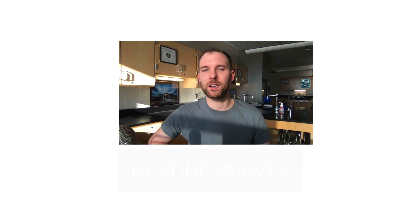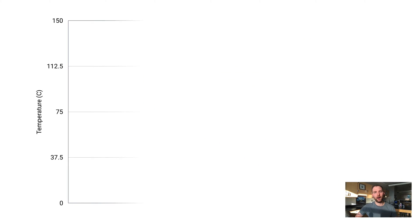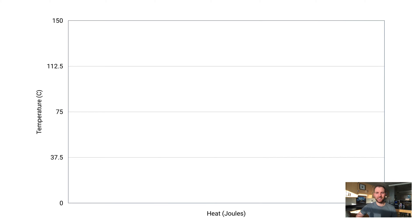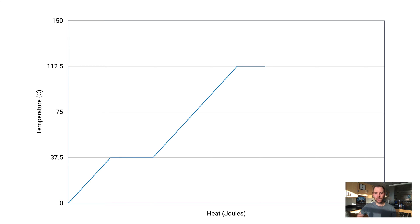The heating curve is what you would plot if you were to plot that temperature as heat is added at a constant rate. Here's an example heating curve: the y-axis is temperature, the x-axis is heat or sometimes time. This is a somewhat oversimplified version — real heating curves are a little more smooth rather than approaching at hard angles like this.